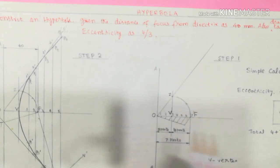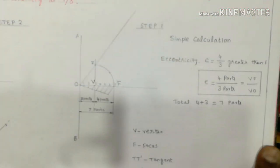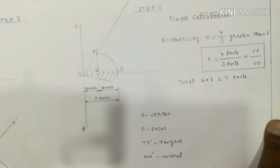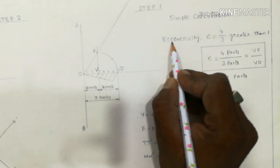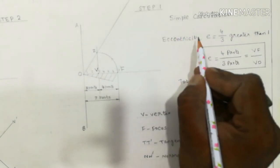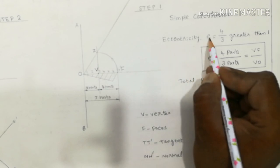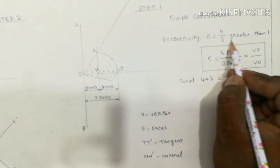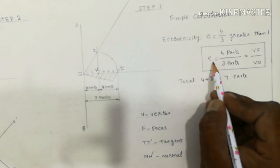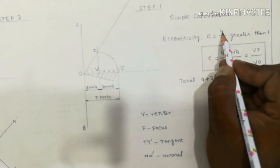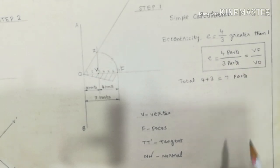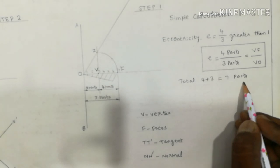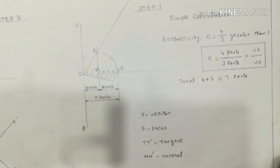The procedure is: first we do a simple calculation. Eccentricity e equals 4 by 3 — numerator 4 parts, denominator 3 parts — so e equals VF by VO. Adding numerator and denominator gives 7 parts total. The distance of focus from the directrix is 40mm.